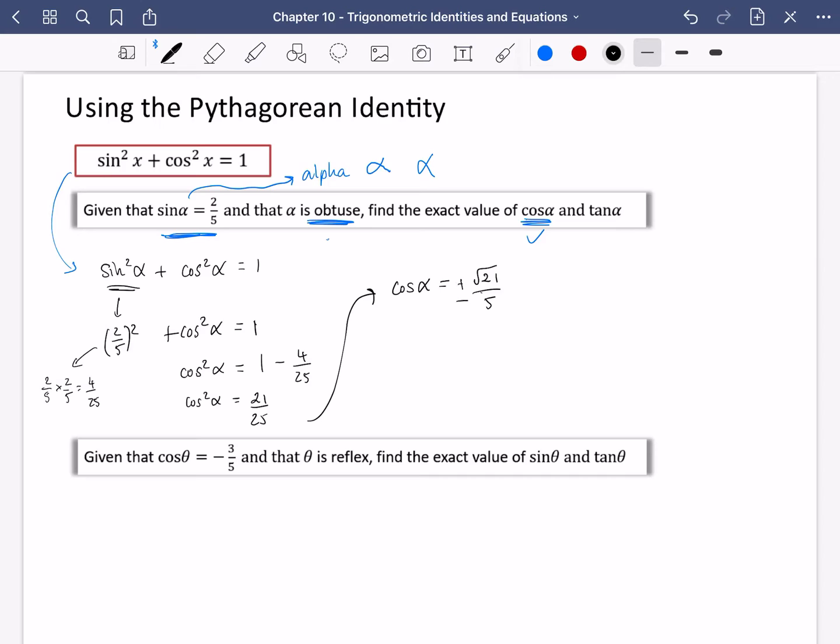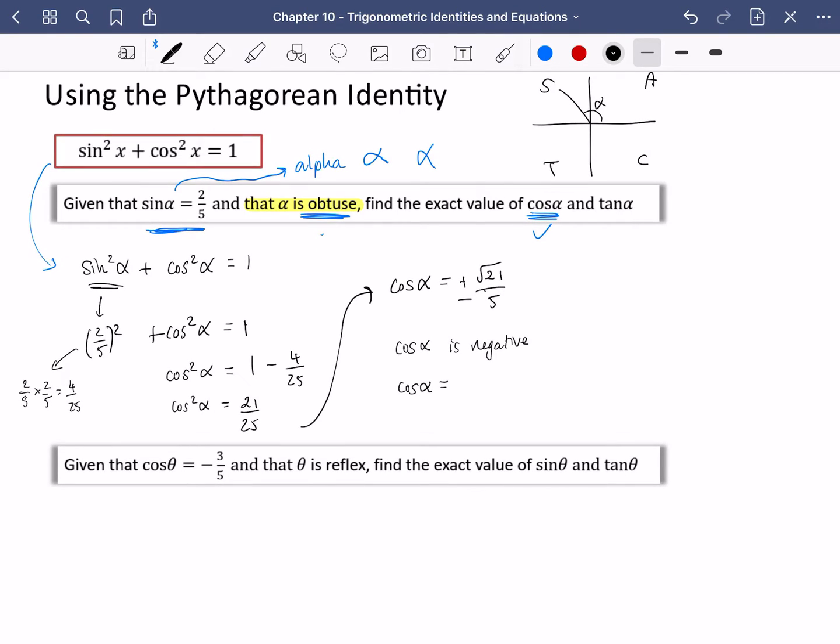However, it could be plus or it could be minus. Now, this is where we come back to this piece of information. It says that alpha is obtuse. So I'm going to go back to drawing my diagrams, my C-A-S-T diagrams. Now, if it's obtuse alpha, that means that the angle is somewhere over in this section. And this tells me that sine is the only thing that is positive over here. This tells me then that cos alpha is negative. And because cos alpha is negative, that must mean that cos alpha is minus root 21 over five. The reason that cos alpha is negative is because alpha is obtuse.